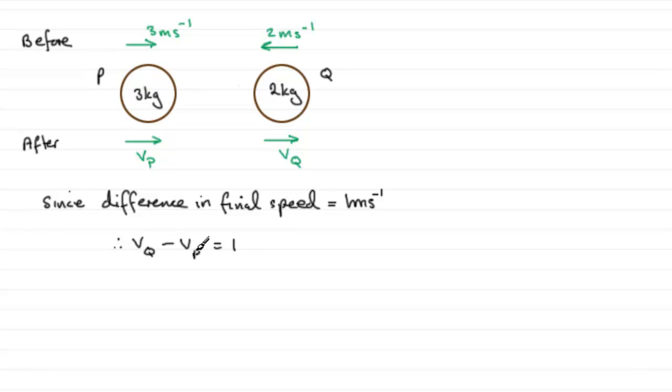We've got two unknowns so we're obviously going to deal with simultaneous equations. We need another equation, so where do we get our other equation from? It has to be by the conservation of linear momentum.